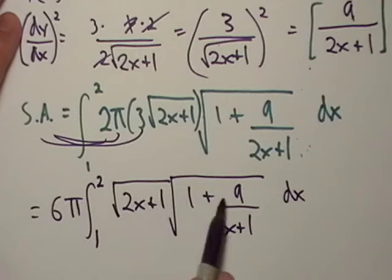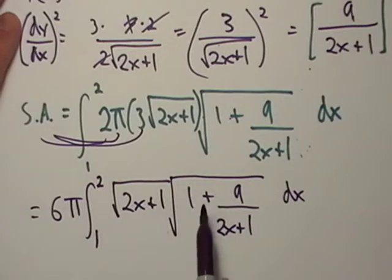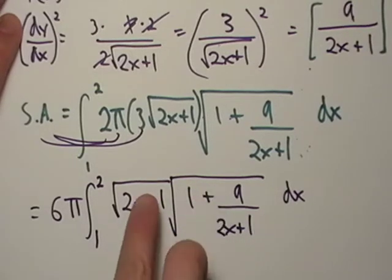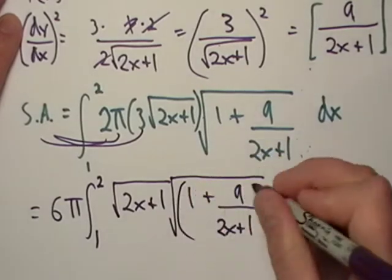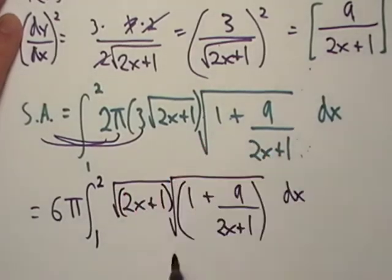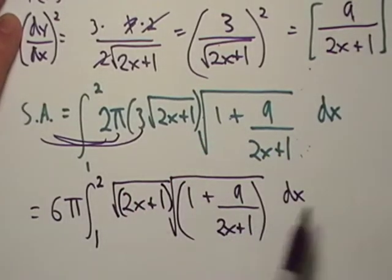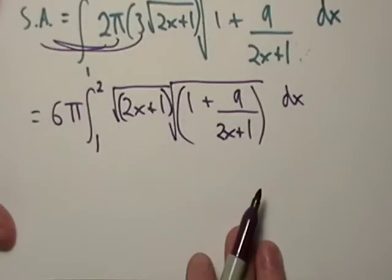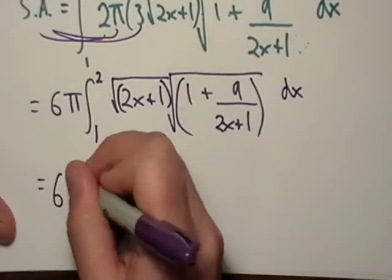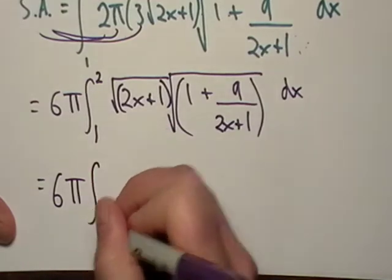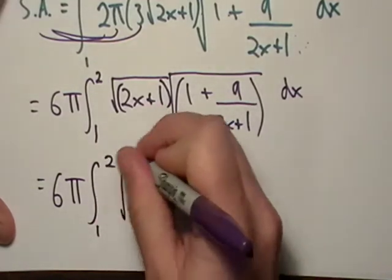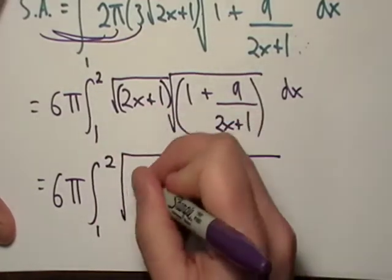Right there, we have two radicals multiplied by each other. That basically means I can just take these two expressions right here, the 2x+1 and the 1 plus this. I can multiply them together under the same radical. That's what I'm going to do right here. I'm just going to rewrite this thing under a really big radical. Let's just draw a real big radical.